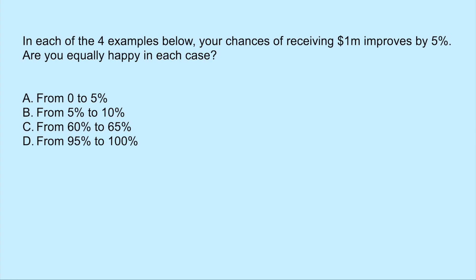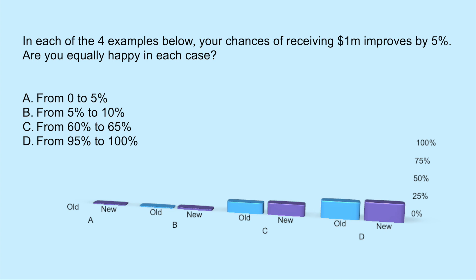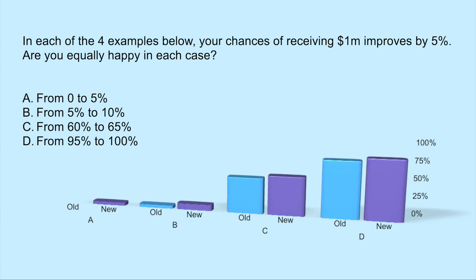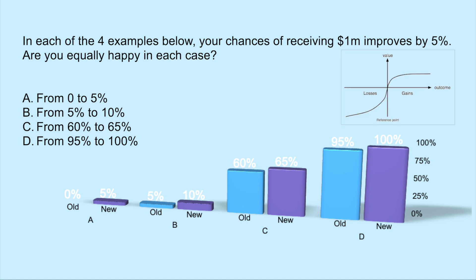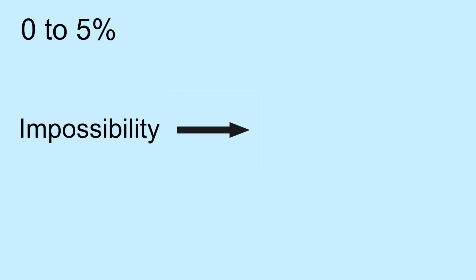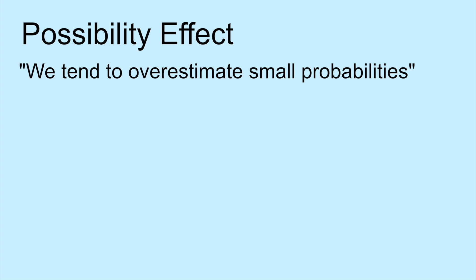Now let's take a look at how we base our decision making when dealing with extreme probabilities. In each of the four examples below, your chances of winning $1 million improves by 5%. Are you equally happy in each case? We have from 0 to 5%, from 5% to 10%, 60% to 65%, and 95% to 100%. Most people would agree that going from 0 to 5% and 95% to 100% would be the most impressive. But why? The probability goes up by an equal amount, and according to utility theory — a theory used in economics that predicts how people make decisions — it says we should be indifferent to all four choices. But clearly that's not how we perceive it psychologically. Going from 0 to 5% is a change of state from impossibility to hope of winning. This is the possibility effect. Highly unlikely outcomes are given more weight than they deserve; in other words, we tend to overestimate their chance of occurring.